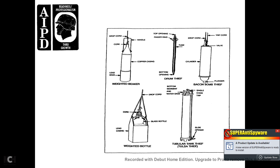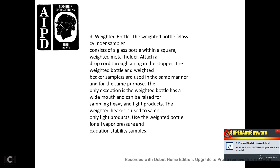Drum thief: a plastic cylinder tube-type sampler consisting of a single piece of plastic tube approximately 39.5 inches long and 1.5 inches in diameter, with two finger rings at the upper end and three supporting legs at the bottom; both ends are open. Use the drum thief to take spot samples and all-level samples from drums and cans. For spot samples, close the top opening with your thumb, fully submerge the sampler, remove your thumb, and fill to the desired level. For all-level samples from drums and cans, submerge the tube fully and place your thumb over the opening to withdraw the sample.